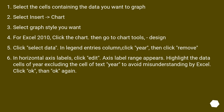Select the cells containing the data you want to graph. Select Insert > Chart. Select the graph style you want. For Excel 2010, click the chart, then go to Chart Tools > Design. Click Select Data. In the Legend Entries column, click Year, then click Remove. In Horizontal Axis Labels, click Edit. When the Axis Label Range appears, highlight the data cells of Year, excluding the header cell to avoid misunderstanding by Excel. Click OK, then OK again.